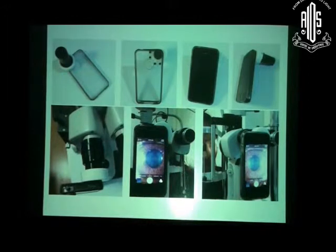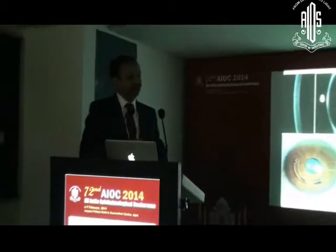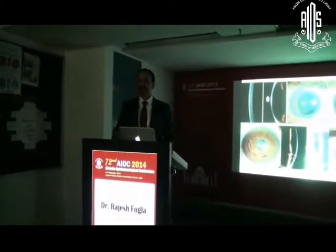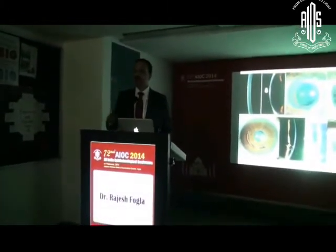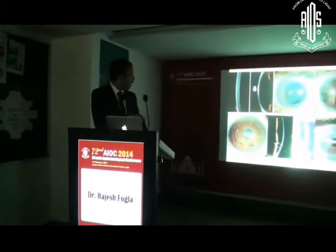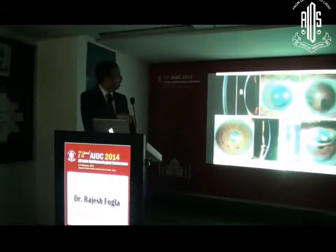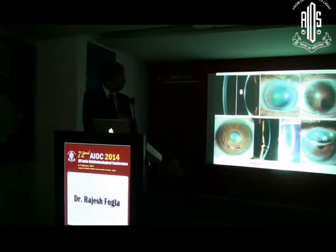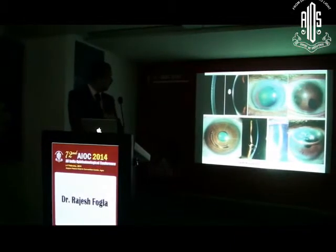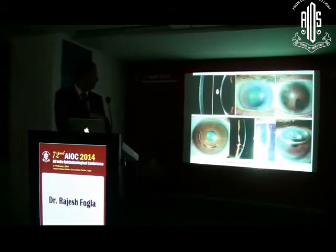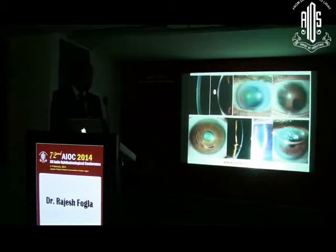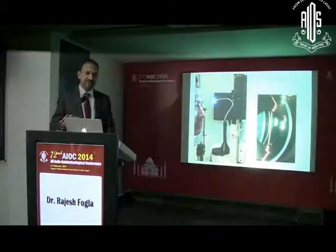When you go for meetings, a lot of people initially said you will not get as good quality as with a photo slit lamp — but look at it: that's the cornea in cross-section, that's the diffuse anterior segment, that's a keratic precipitate, that's the intacs in cross-section, and that's a Descemet's membrane detachment. You name it — everything you can capture.